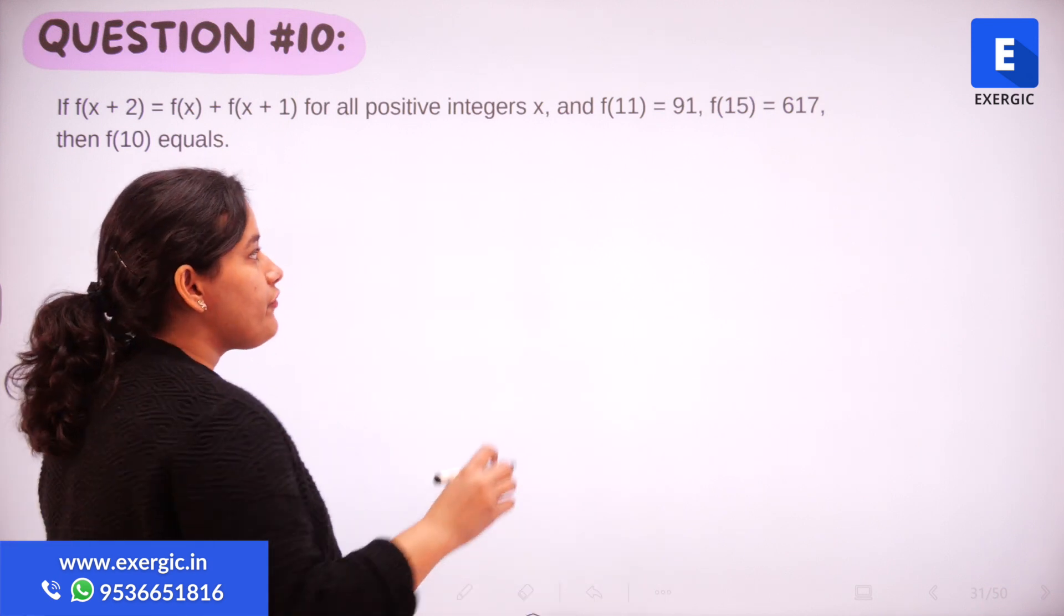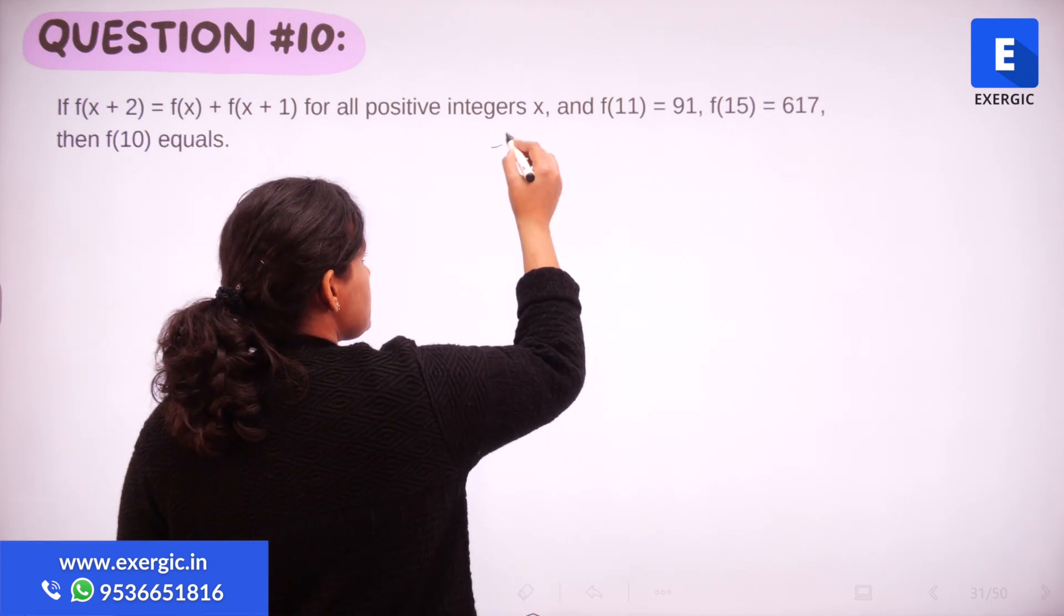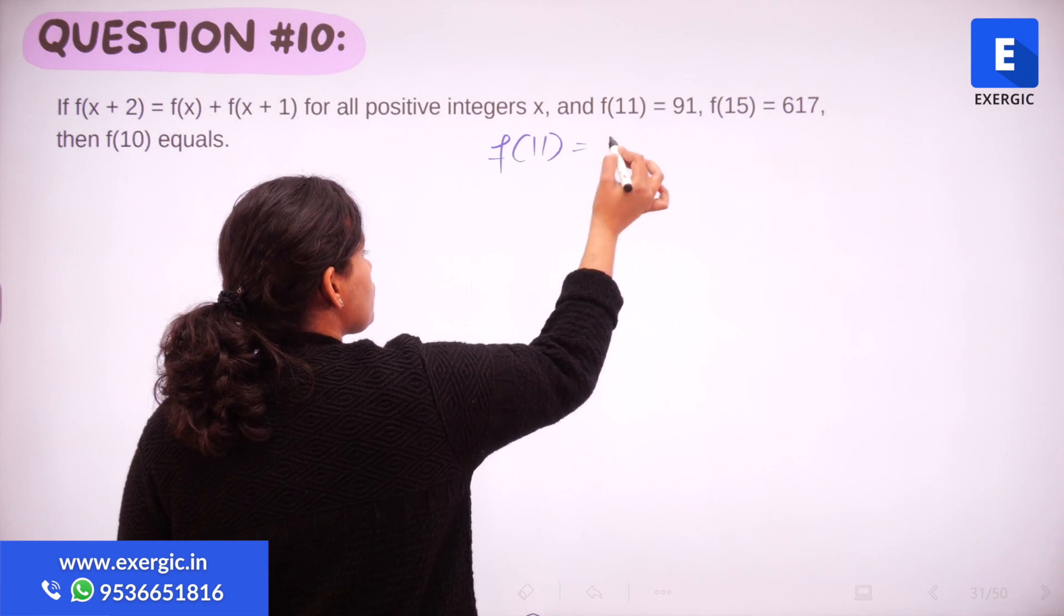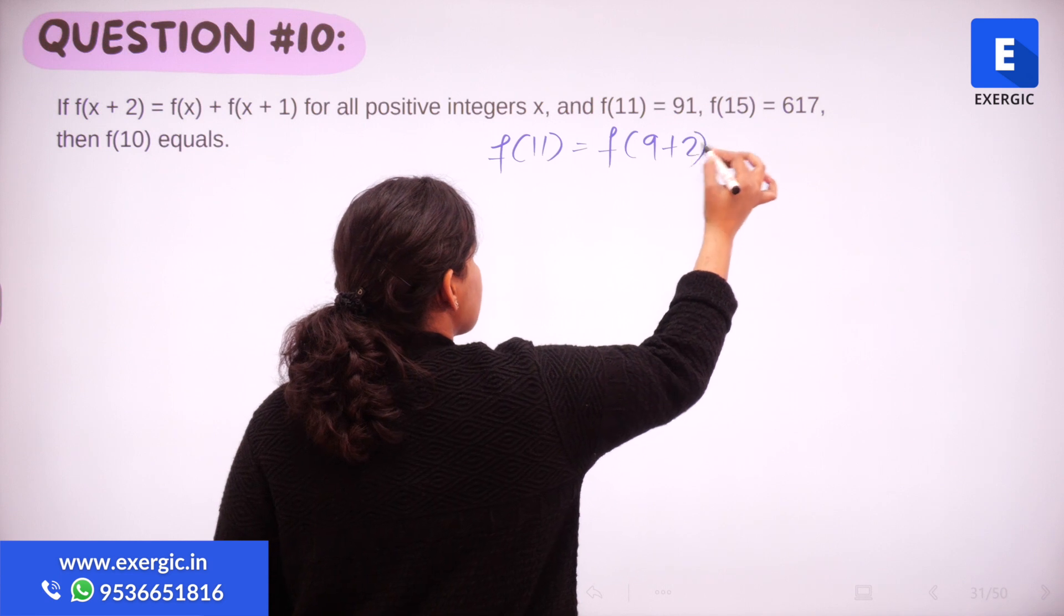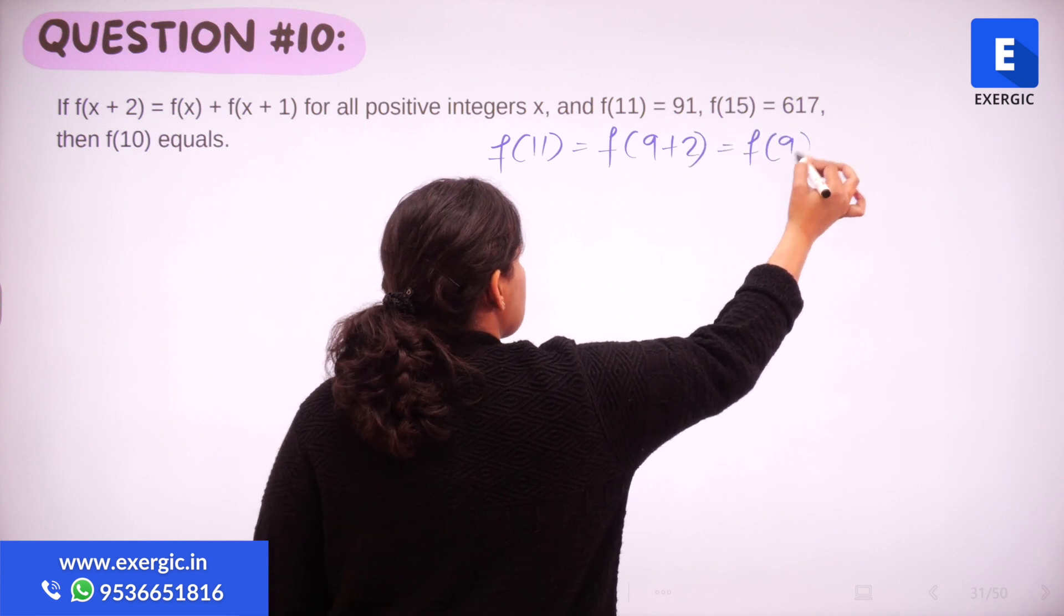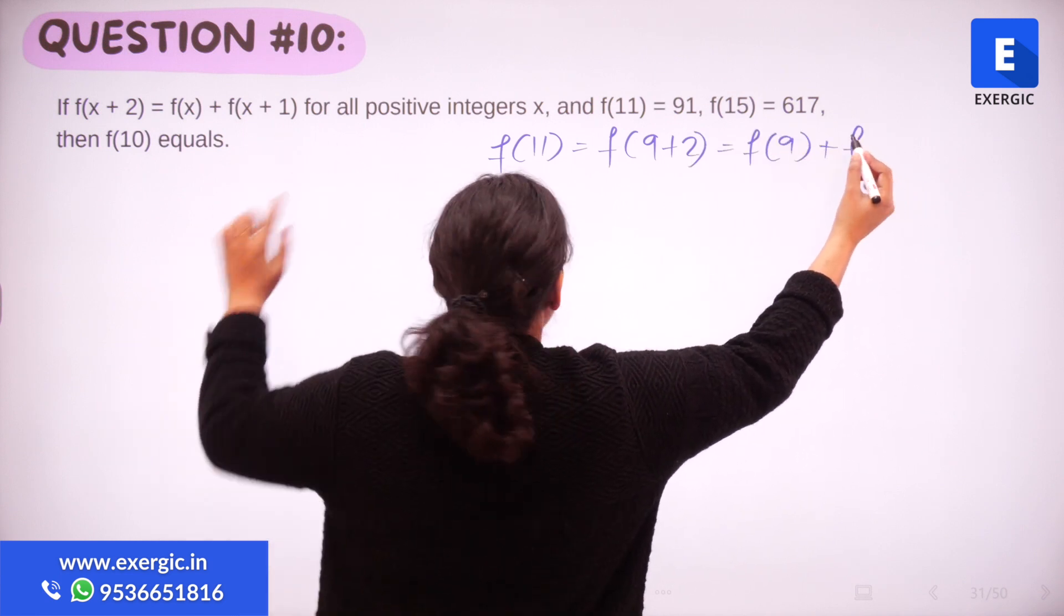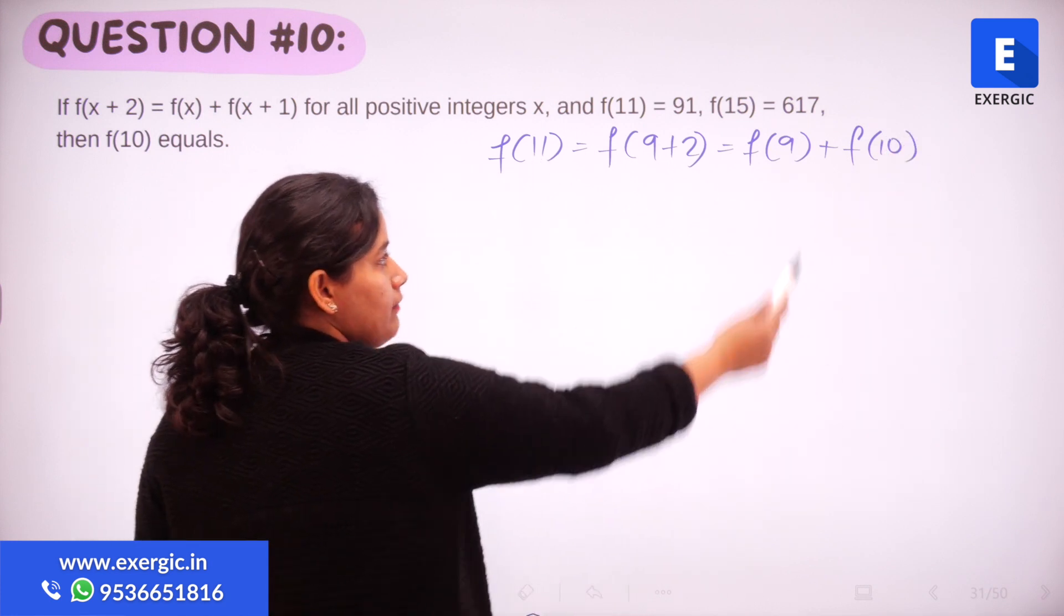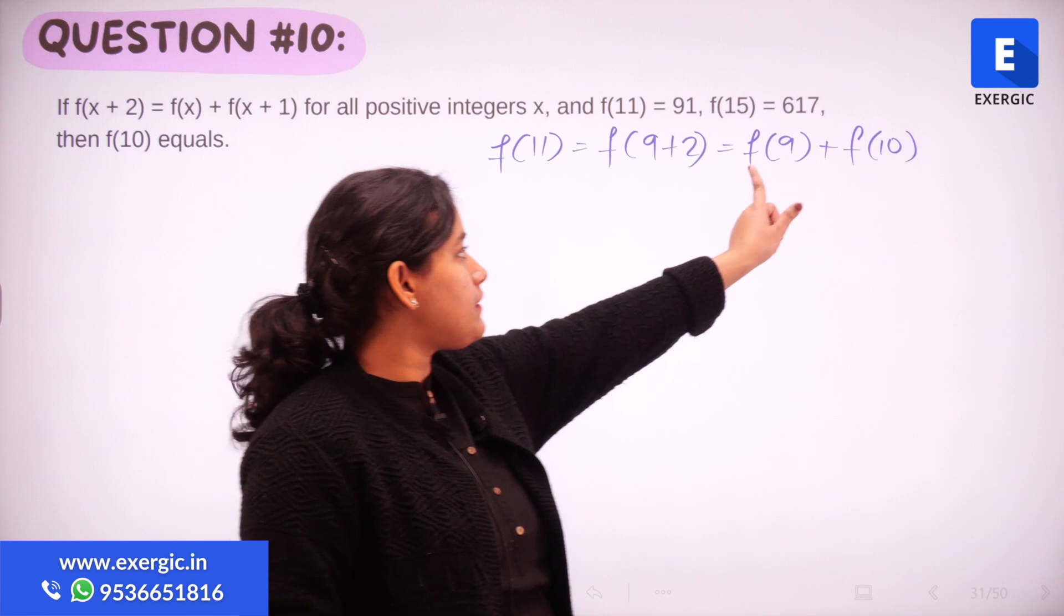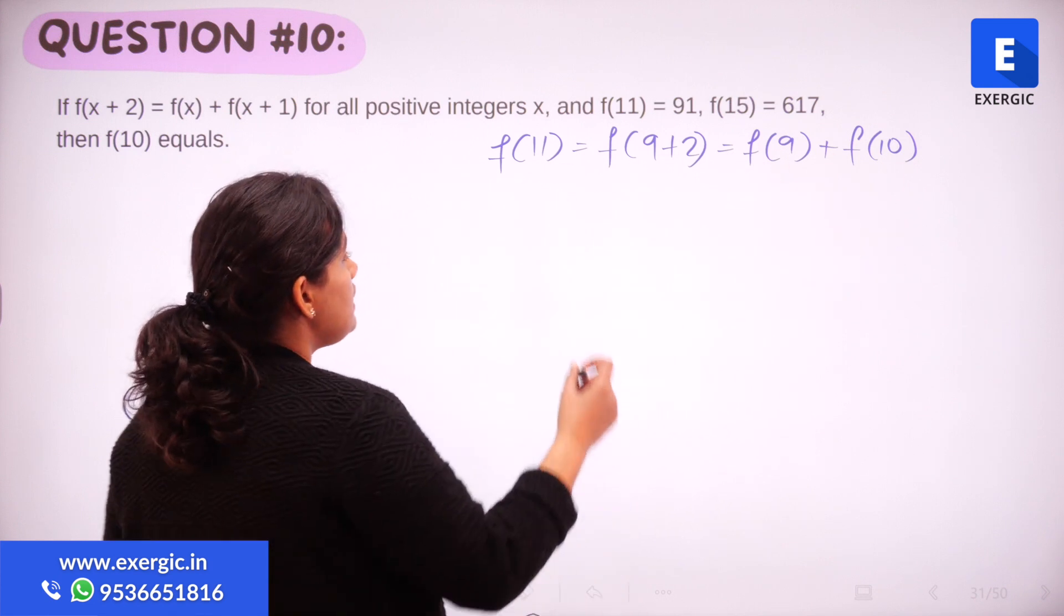So we have f(11) given as 91. What is this f(11)? f(11) is going to be f(9+2) and that gives me f(9) plus f(9+1) that is f(10). So f(11) is f(9) plus f(10). So the pattern here is 9, 10, 11.